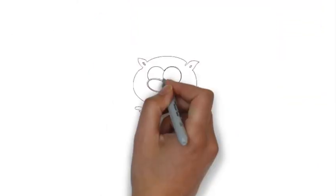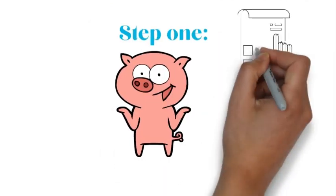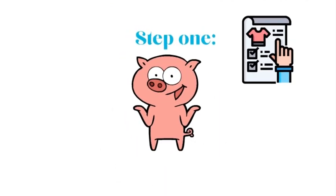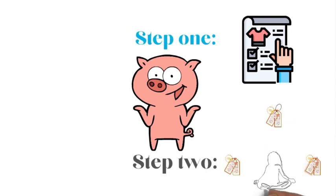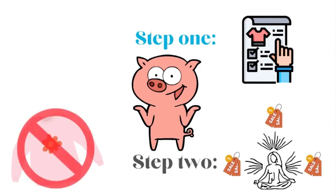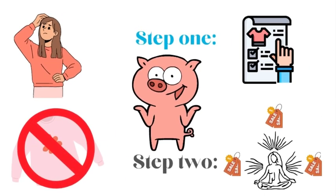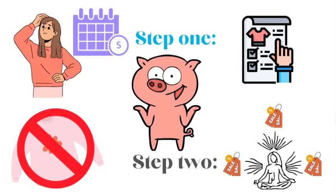But no worries, there's a master plan to dodge these shopping traps. Step one, make a list before you hit the stores. Step two, channel your inner self-discipline guru when you're surrounded by sales. If that sweater isn't on your list, it's not meant to be. And if it keeps haunting your thoughts, no sweat. Add it to next month's budget and let the waiting game begin.